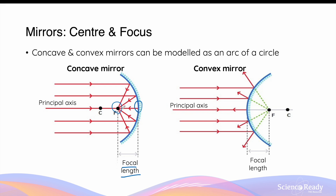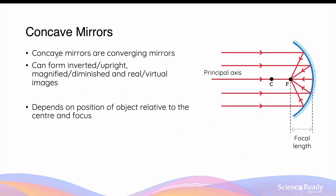The focal length is in front of the concave mirror, and the focal length is behind the convex mirror. Concave mirrors are what we call converging mirrors, because when the light rays reach the concave mirror, the reflected light rays will converge to a single point that is the focus.